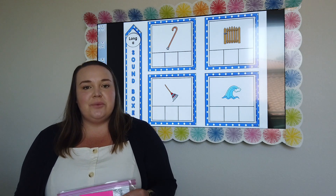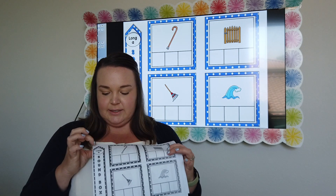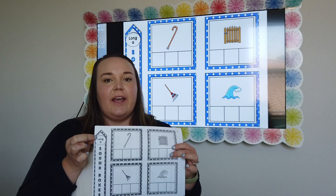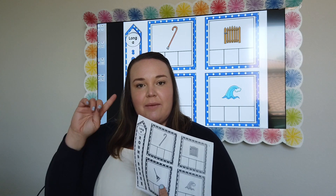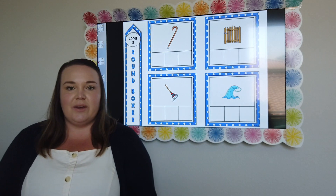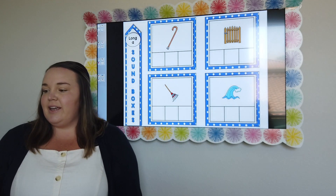Alright friends, so this week we get to work on the magic E. You're going to need to get your packet out of your literacy skills one. You need to get the one that says long A. You can complete it on here as I do it up here, and then the last few you will complete within Seesaw. So let's go ahead and get started.